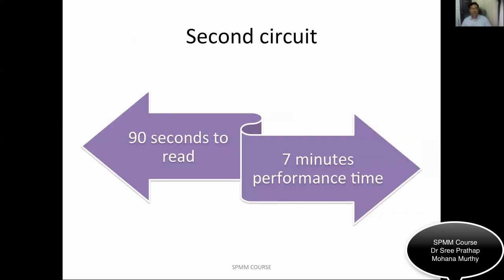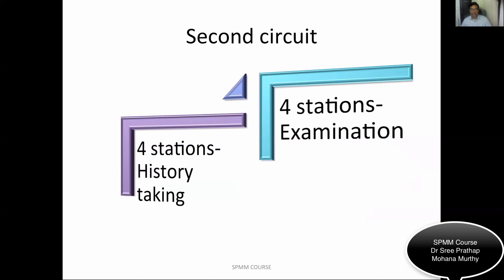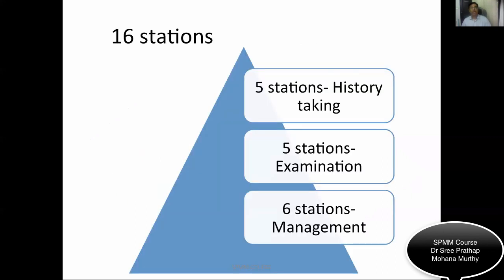In the second circuit, you will have 90 seconds reading time and seven minutes performance time with a warning bell at the end of six minutes. At the end of seven minutes, you stop and move to the next station. The second circuit has eight stations: four based on history taking and four based on examination, which includes mental state examination, capacity assessment, and risk assessments. Overall, you'll have 16 stations — five history taking, five examination, and six management.